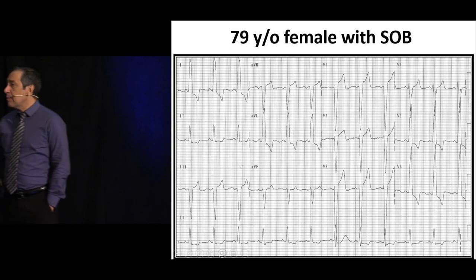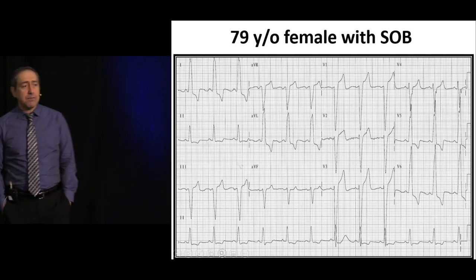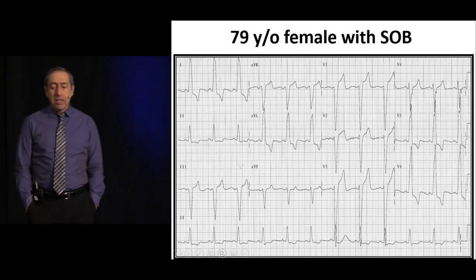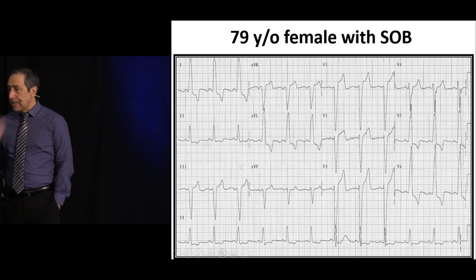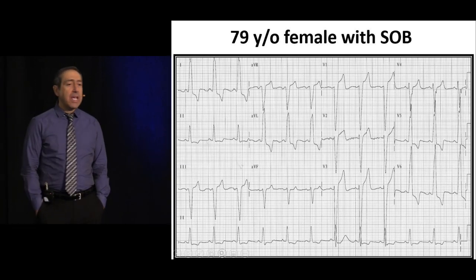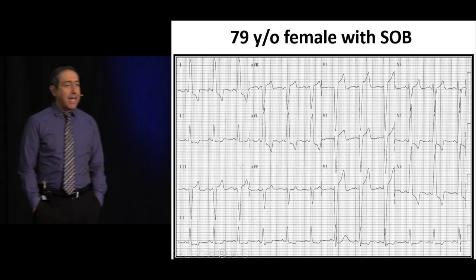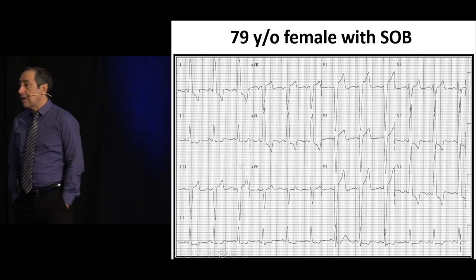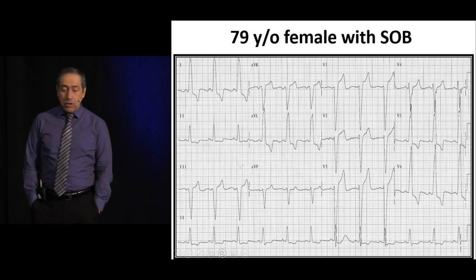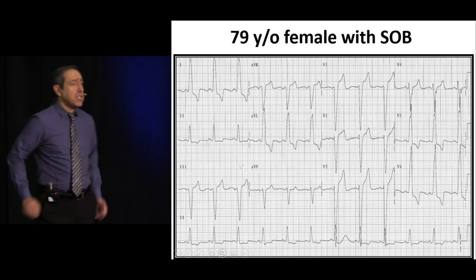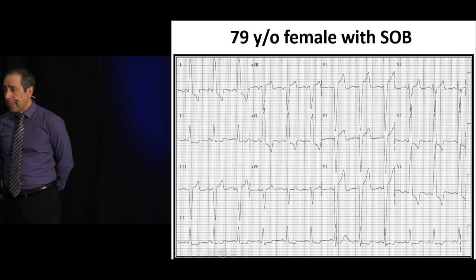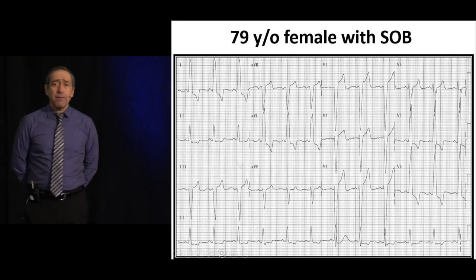Next topic: left bundle branch block. This is something very straightforward but very confusing to many people initially. In left bundle branch block, patients already have ST segment elevations, typically seen in V1, V2, and V3. These ST segment elevations are typically no more than five millimeters, and they are concave.